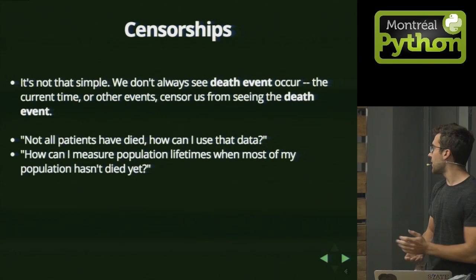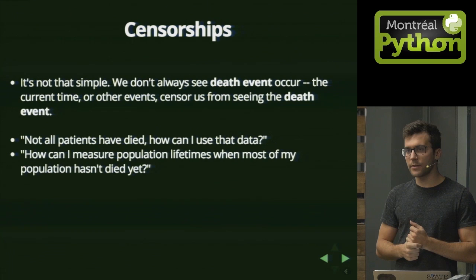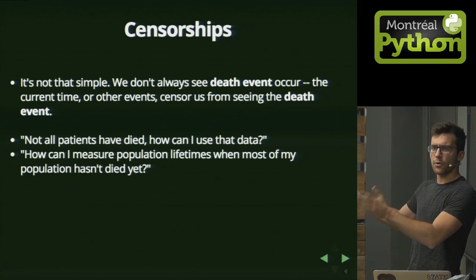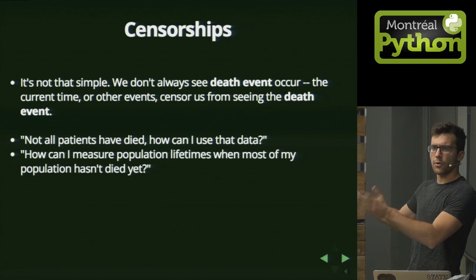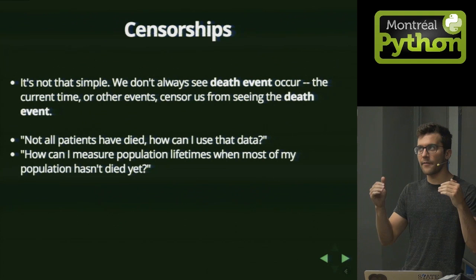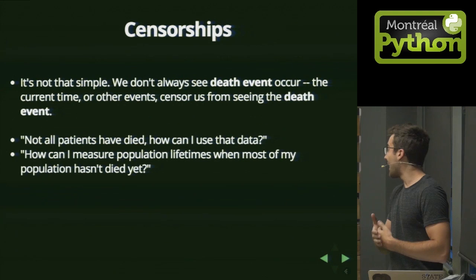There's an additional problem on top of survival analysis that makes it really, really interesting and useful — the idea of censorship. Censorship is when I don't actually see when the individual dies. Consider in the medical profession: I give a miracle drug to one cohort and a control drug to another. The miracle drug means no one dies, and the other drug means some people die. I still want to make an estimation even though I haven't seen all deaths. In this case, I've been censored from seeing the death event in one of the cohorts.